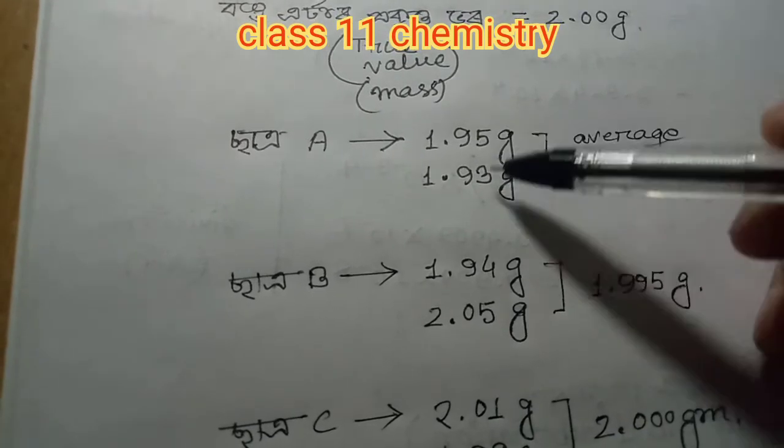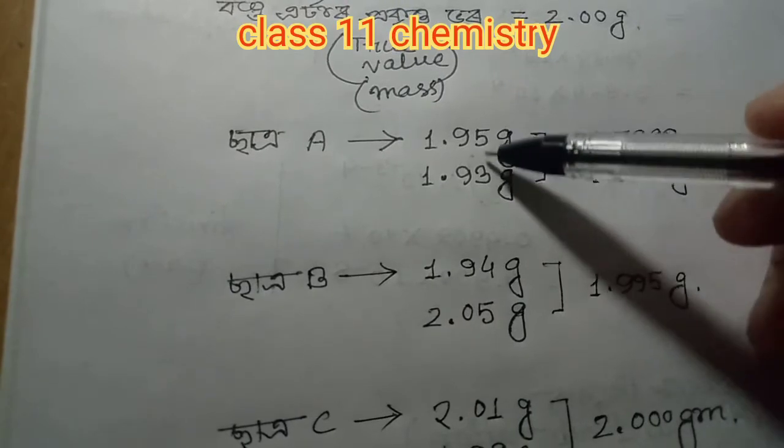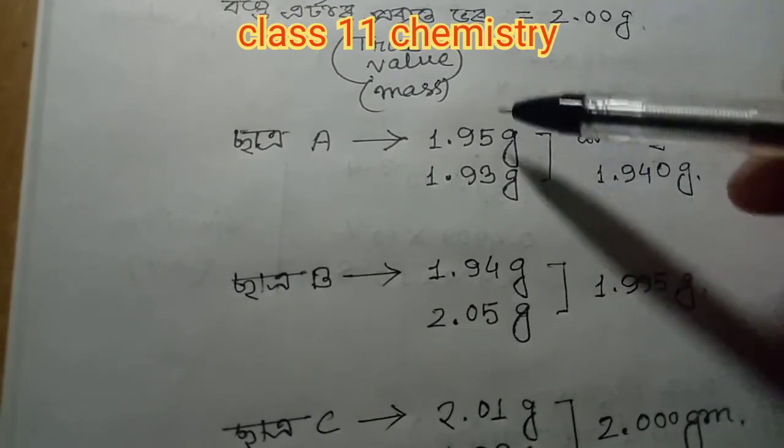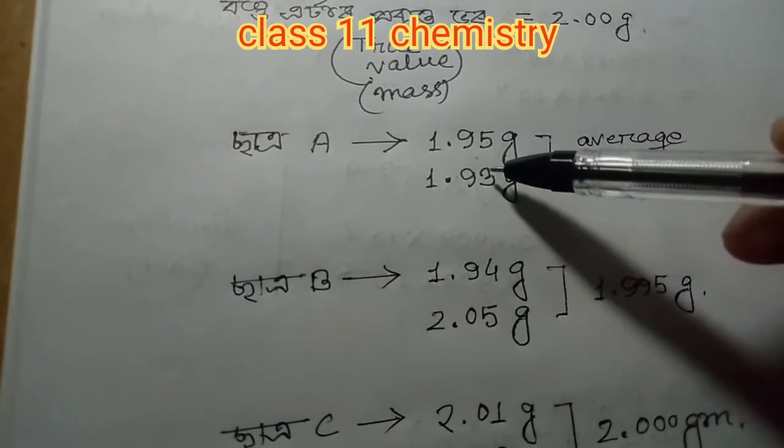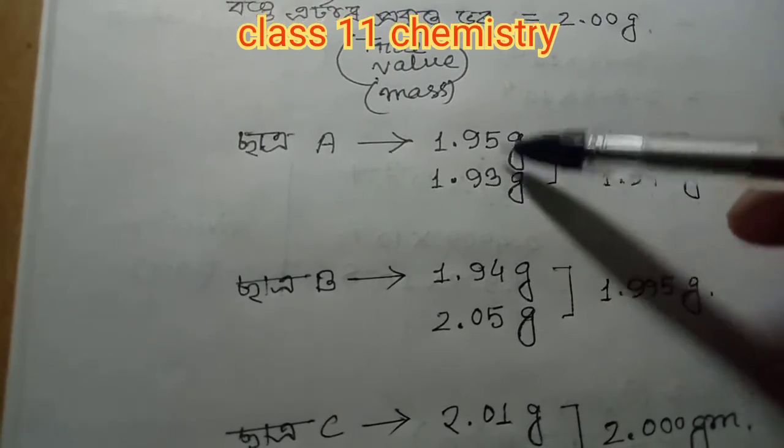The key values are 1.95, 1.93. If you compare them, you can see which values are quite good. Now comparing the two measurements, the next values.